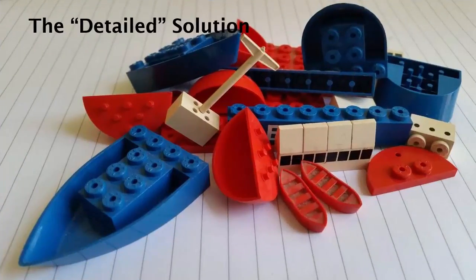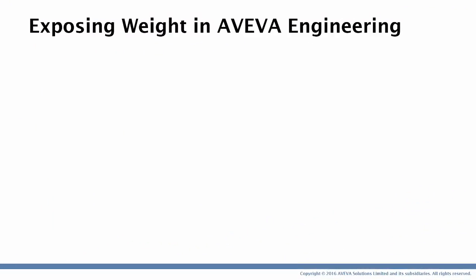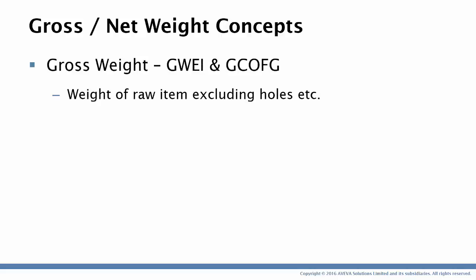Let's move on to something a little bit more complicated — a much more detailed solution. Here we're going to be exposing weight from the 3D design into Aviva Engineering. In this case, I want to talk much more about how weight is calculated in the Aviva products — we're going to have a look at weight in 3D, the different calculation concepts of weight, different types of weight, how weight is physically generated, and how it's generated from the catalogue and other reference information. Let's start first with the gross and net weight concepts. Pretty much every 3D item has a set of attributes called G-Way and G-C of G which represent the weight and the centre of gravity.